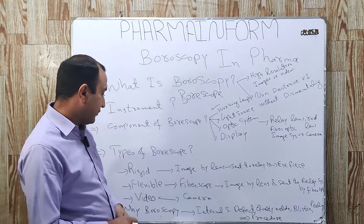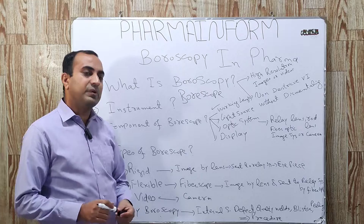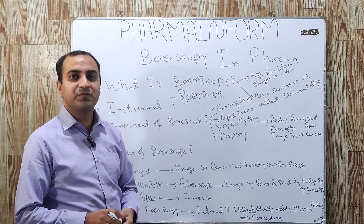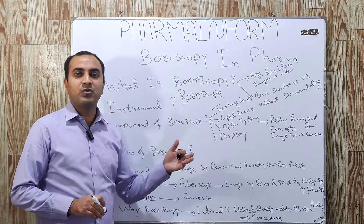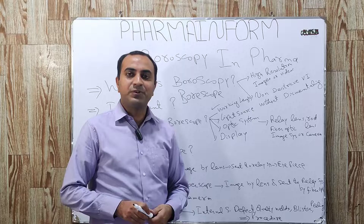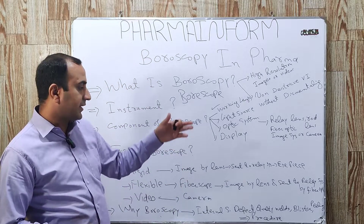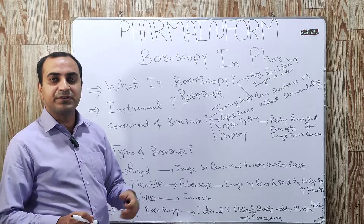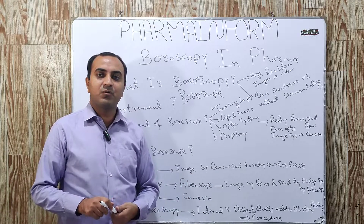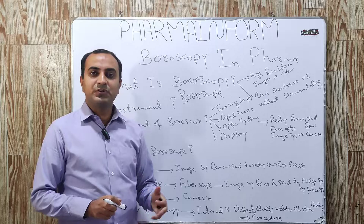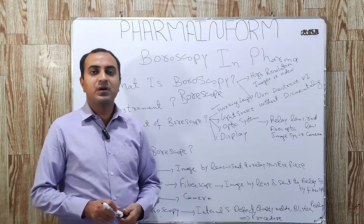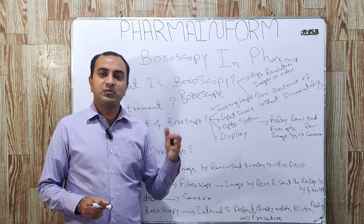Why do we need boroscopy? We need boroscopy for the inspection of internal surfaces to observe any surface defects, ruin, or corrosion. We use boroscopy to find out if there are any blisters, cracks, or peeling on the internal surface. Boroscopy is also used to inspect the quality of welding joints, which is one of the most important applications of boroscopy.